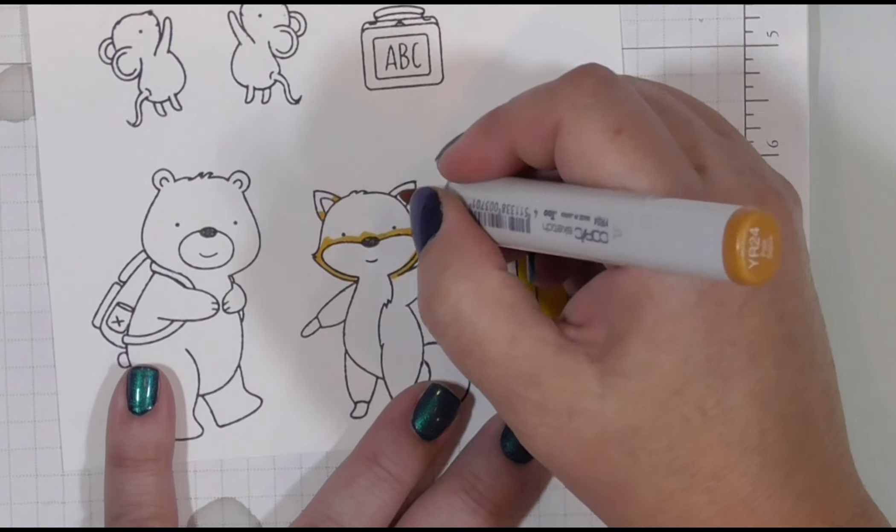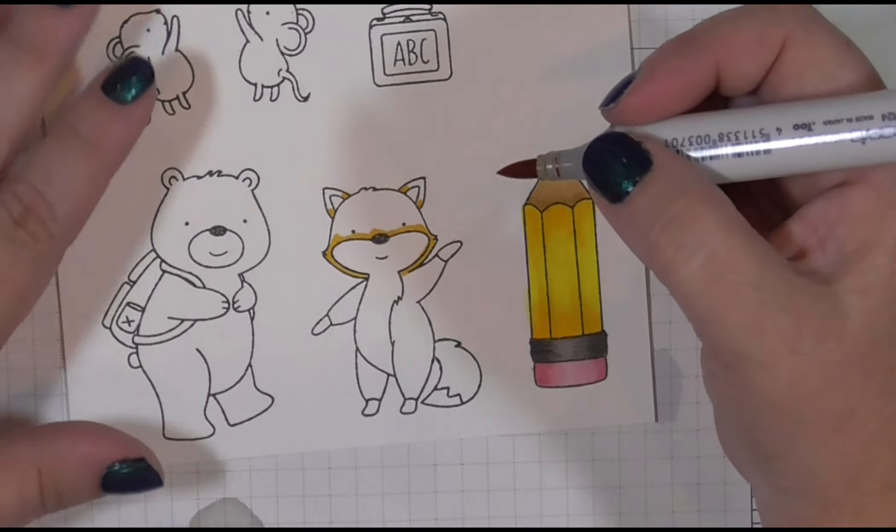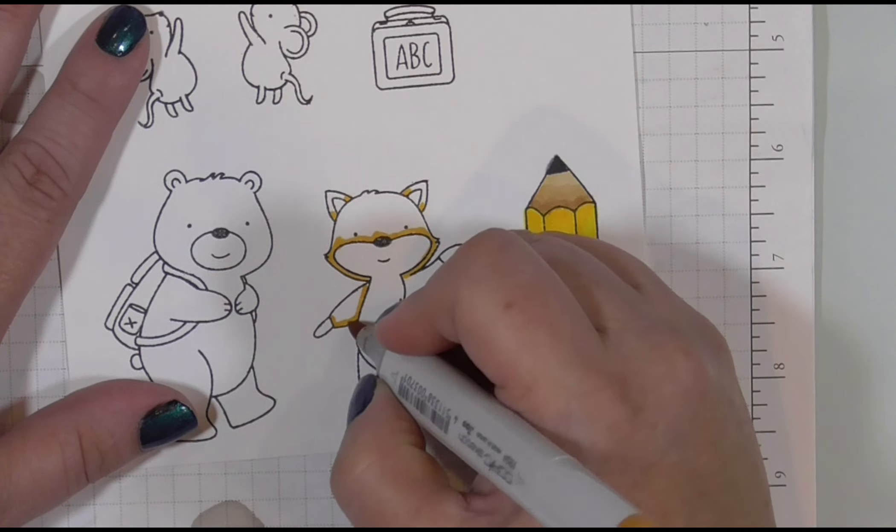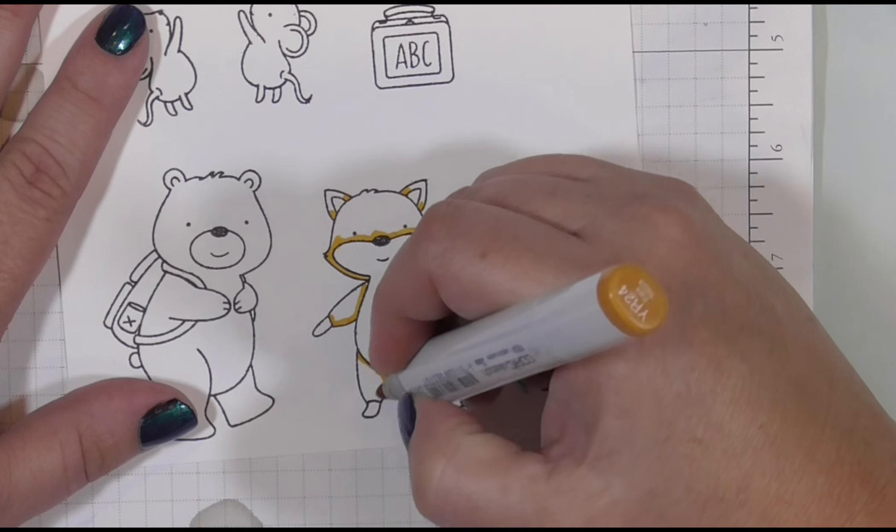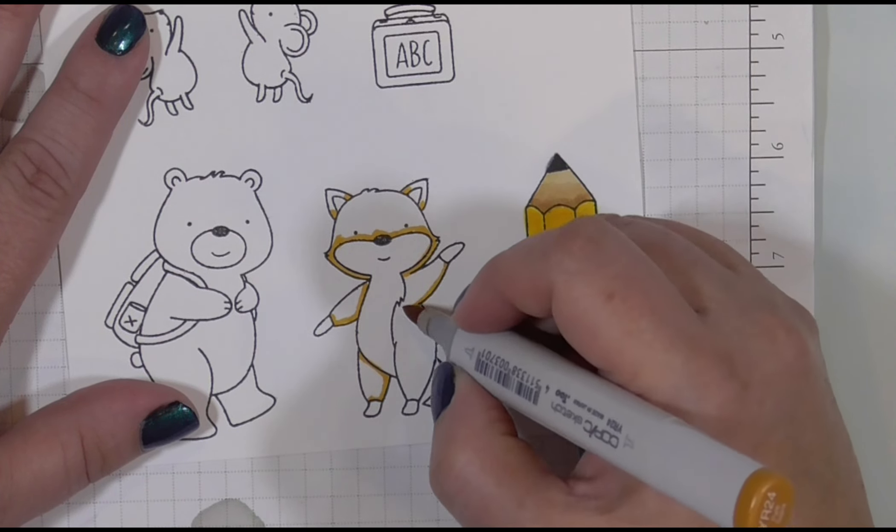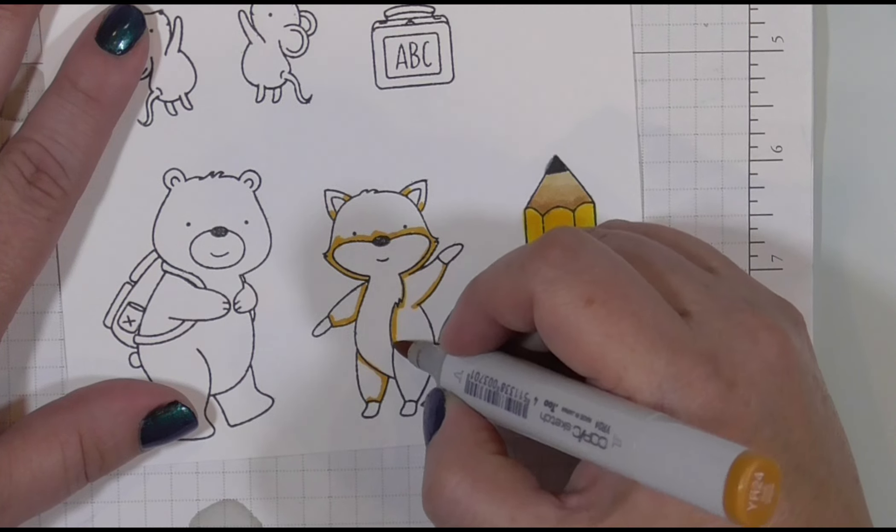Our next character is a man named Joseph, and I'm going to butcher his last name, and I apologize. I looked up how to say this, and I think I have it right. Kahahawaihi. We're just going to call him Joe.